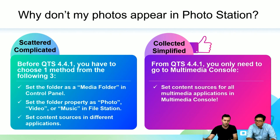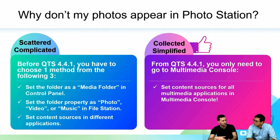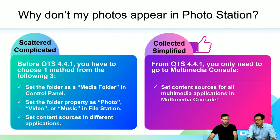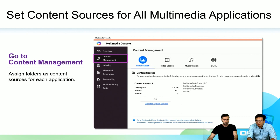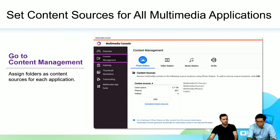What's new is that we put all of those options into one — one action performs all the activities that were previously separate. Whenever you want to change any setting about multimedia applications in QTS 4.4.1, you just go to the multimedia console. For instance, to set the content source for an application, go to multimedia console, click the content management page, and you can see all the application list and set their content source one by one.